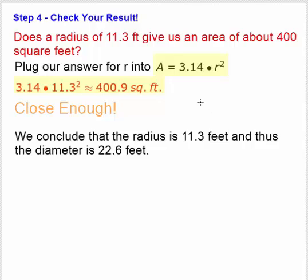So we conclude that the radius rounded to the nearest tenth of a foot is 11.3 feet, and we have a diameter of twice that, which is 22.6 feet.